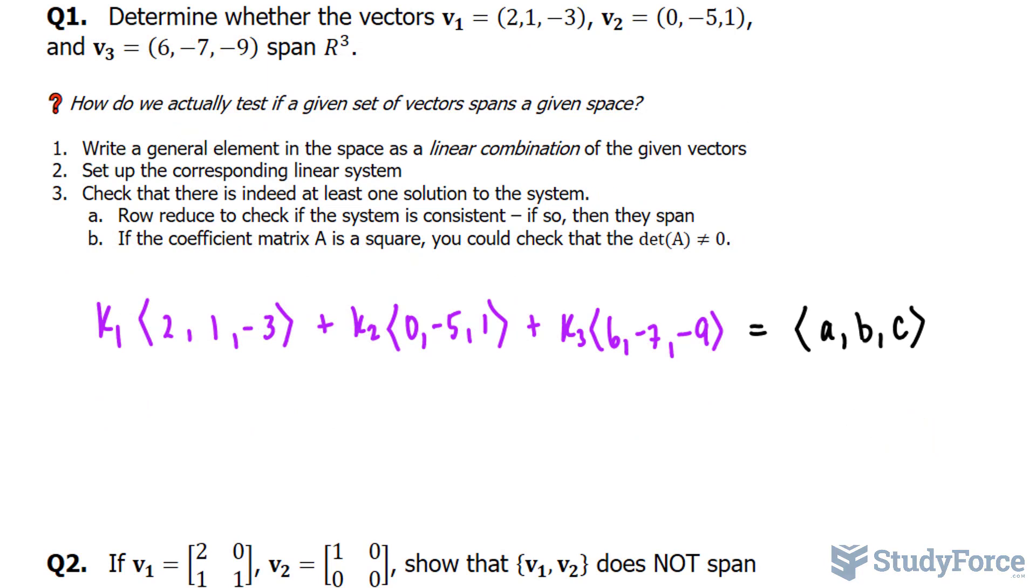In step number two, we have to set up the corresponding linear system. And the way we do that is we equate k1 times 2, plus k2 times 0, plus k3 times 6, equal to a. And we'll do this for each letter, a, b, and c.